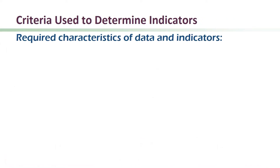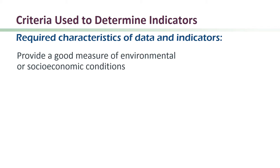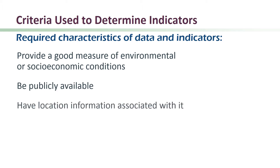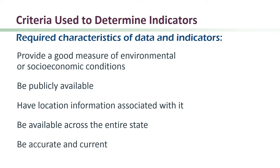Certain criteria were applied to determine whether data and possible indicators should be included in CalEnviroScreen. An indicator needs to provide a good measure of environmental or socioeconomic conditions in California. The indicator data also need to be publicly available where possible. The information needs to have location information associated with it, such as an address, so that it can be assigned to a specific place in the state. The data needs to be available across the entire state and must be as accurate and current as possible.